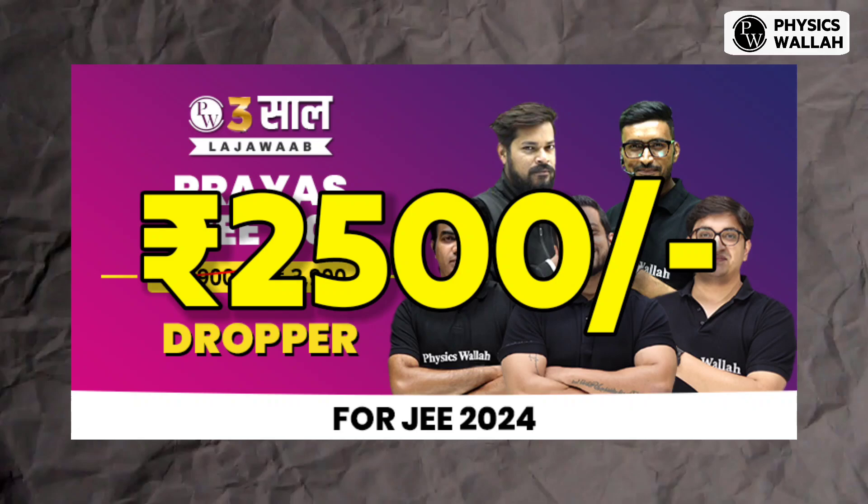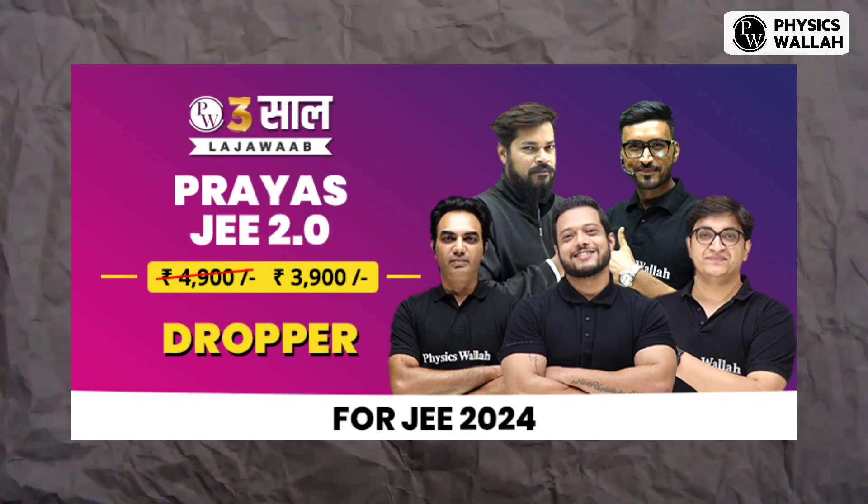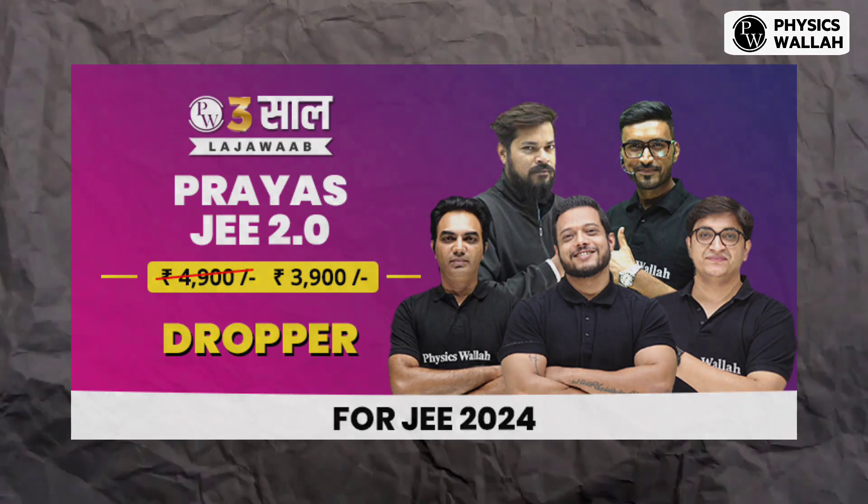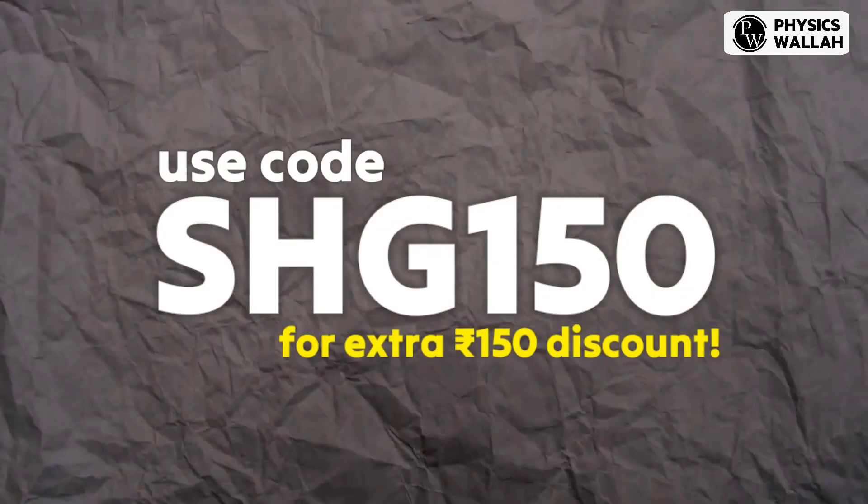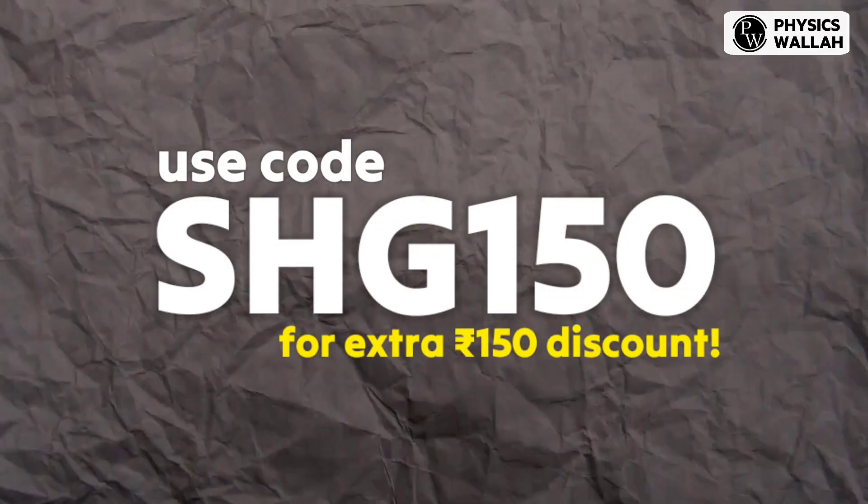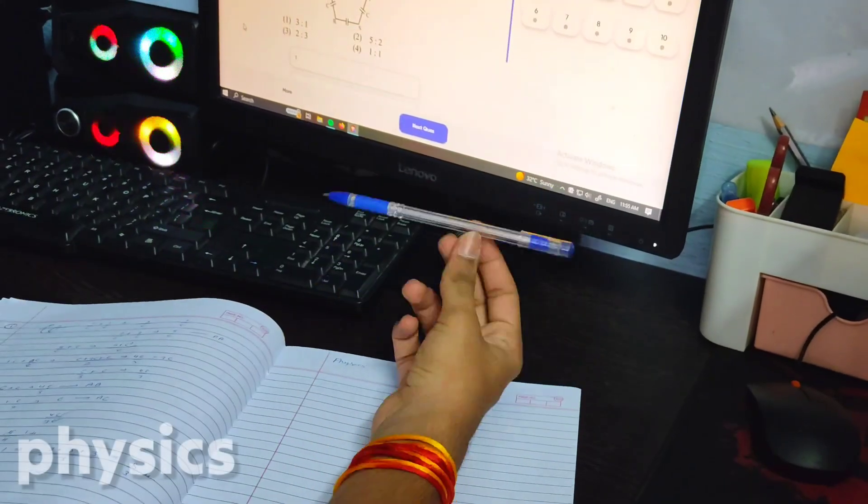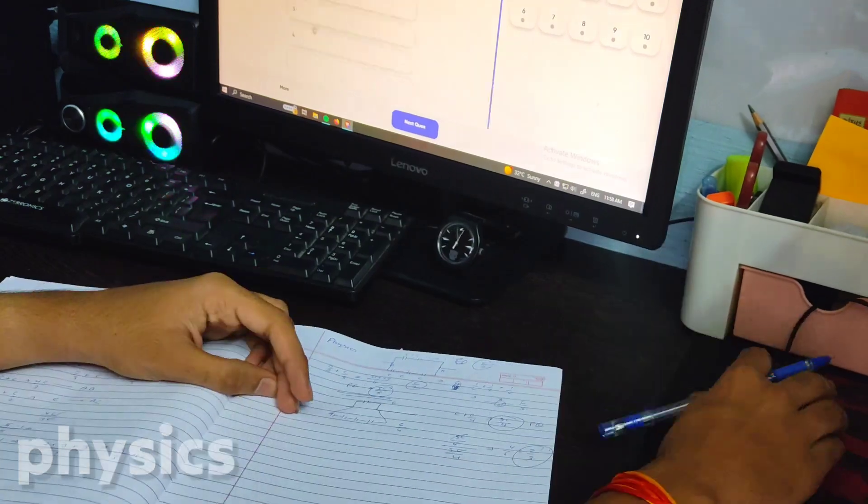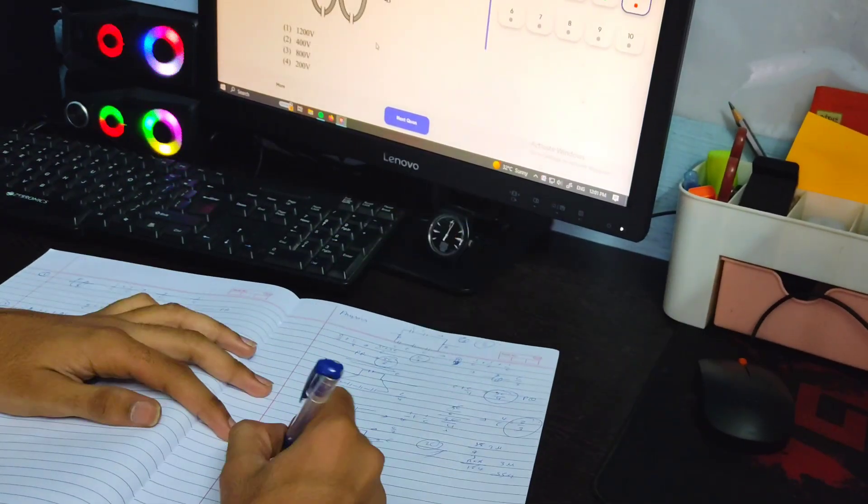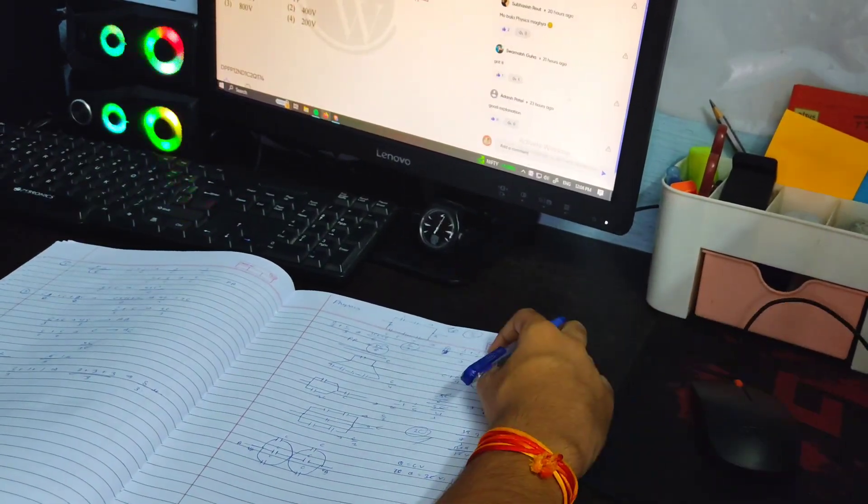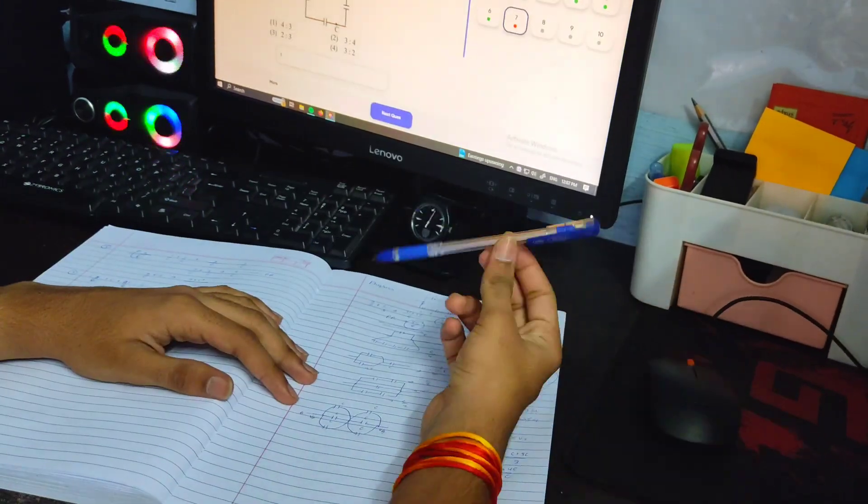So this is the lowest price now. If you want to purchase any batch of Physics Wallah you can purchase them now and you can use this code which is SHG150 to get extra Rs. 150 discount on these batches.